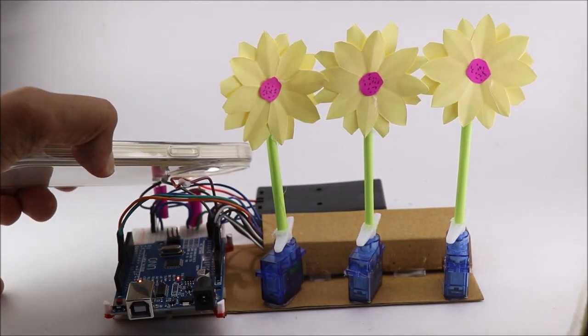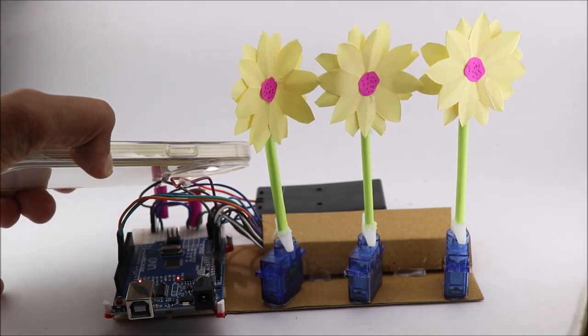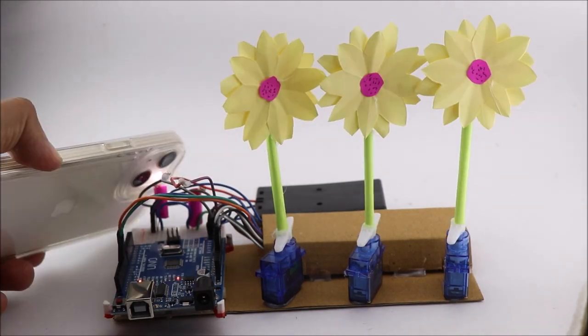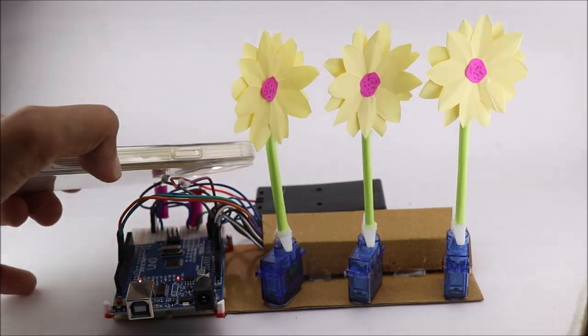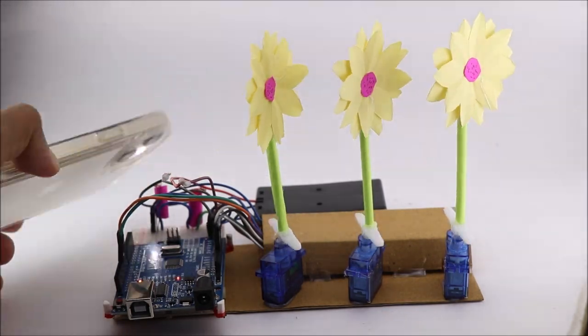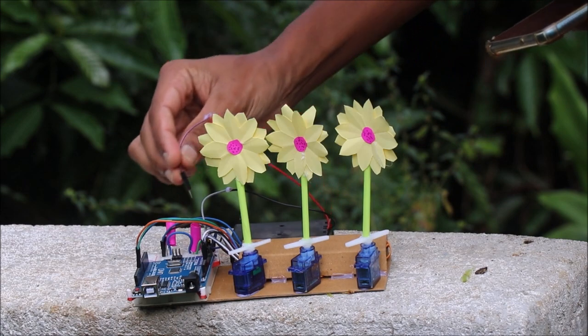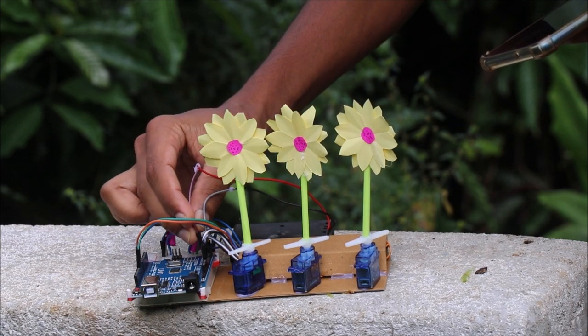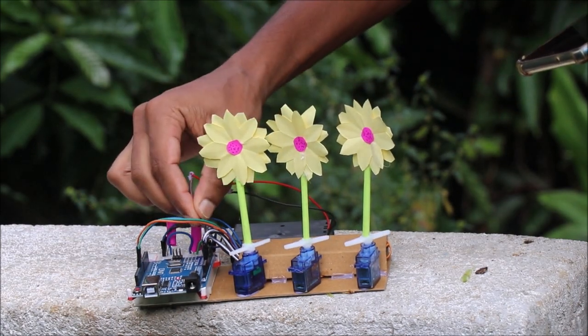Now when the left LDR is exposed to sunlight or any light source, the sunflower turns towards left. And when right LDR is exposed to the light, the flower moves towards the right. And when both the LDR receives equal amount of light, the sunflower comes to a halt.